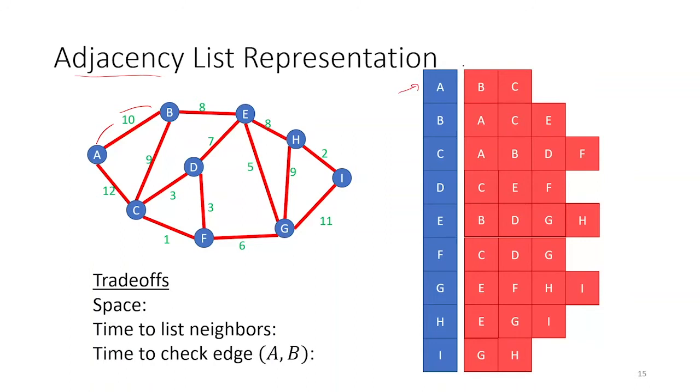So this says that A is adjacent to B and C. So we have edges that go from A to B and A to C. B has edges to A and to C and to E and so forth. So that is one way we could represent our graph, write down the definition of our graph.